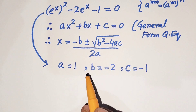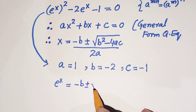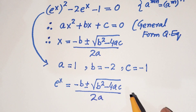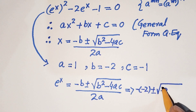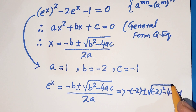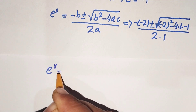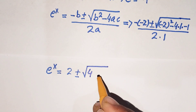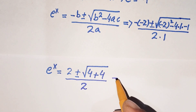Using the quadratic formula, e raised to power x equals minus b plus or minus square root of b squared minus 4ac, all over 2a. Putting in the values: minus b is minus times minus 2, b squared is minus 2 whole squared, and minus 4 times a times c is 4 times 1 times minus 1, all over 2 times 1.